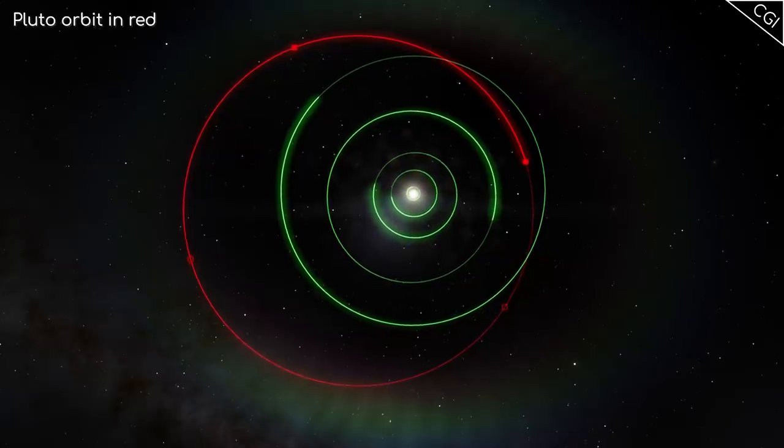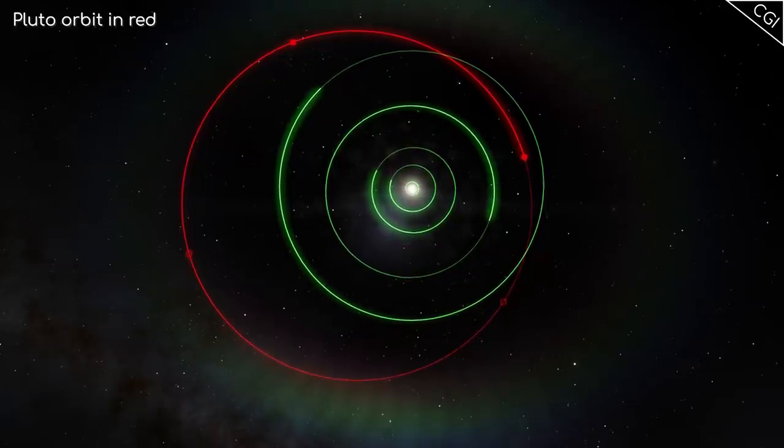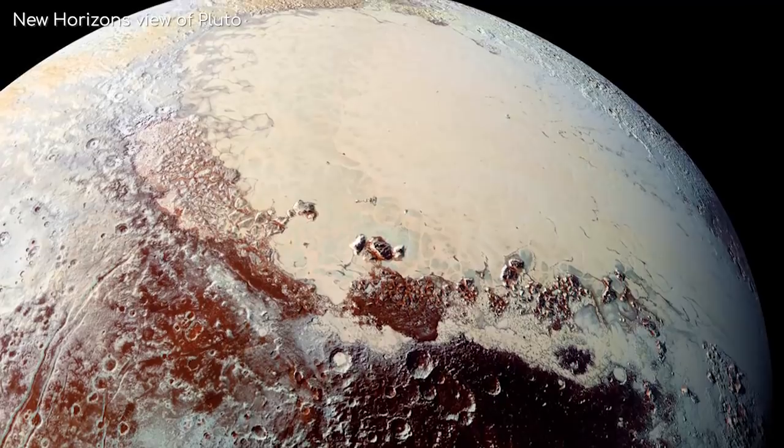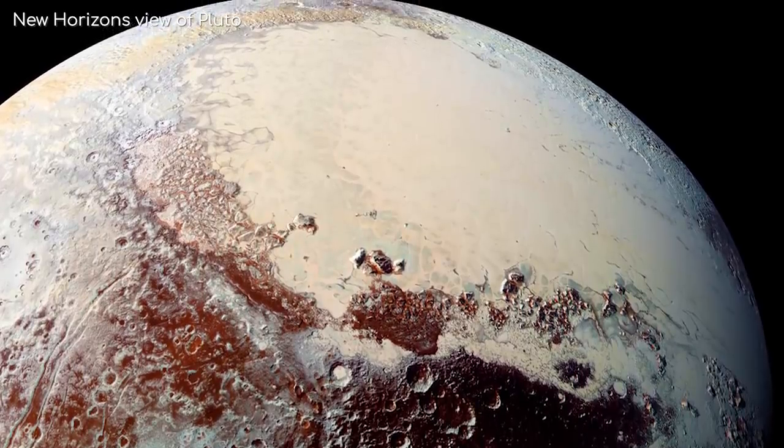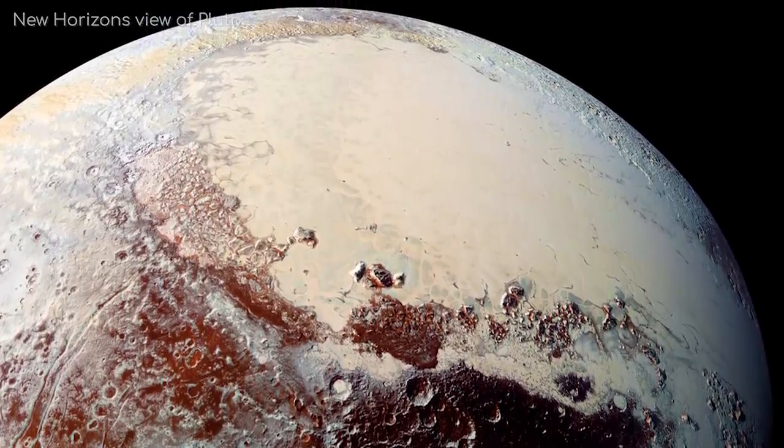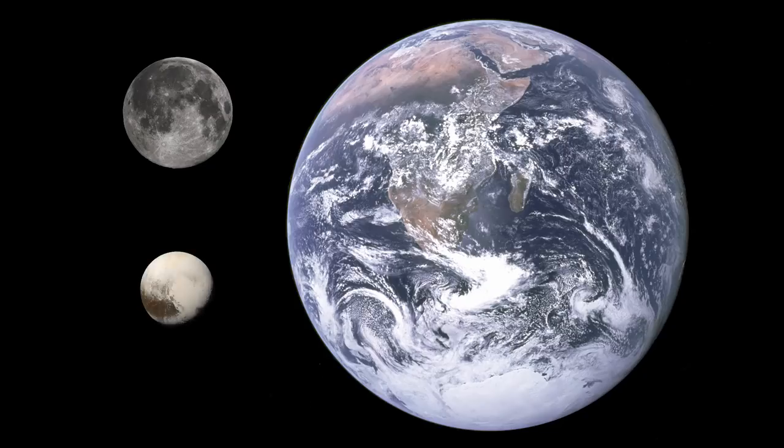But it was also unique, so no one minded it being called a planet. But then, in the 1970s, Pluto was discovered to be a lot tinier than expected. It turned out that its mass is only one sixth of our moon.